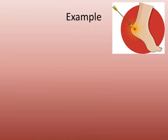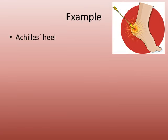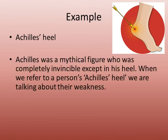Here's an example. When you see this picture, does it make you think of something? An arrow in someone's heel — an Achilles heel. If you've ever heard of an Achilles heel: Achilles was a mythical figure who was completely invincible except for his heel. When we refer to a person's Achilles heel, we are talking about their weakness.